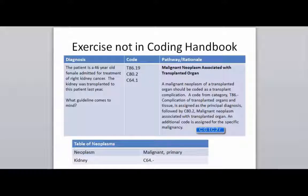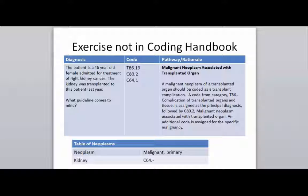She has kidney cancer. We look up under our table of neoplasms, malignant primary column — it's the kidney with a C64 dash, meaning we're going to have additional characters to identify her as having the right kidney. The right is character one in this code, so the final code is C64.1. Just a good example of knowing that it's not always about organs that you were born with — sometimes it's about organs that you received.